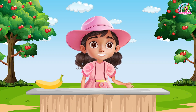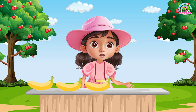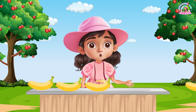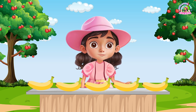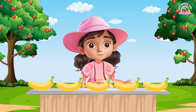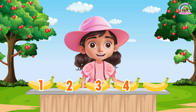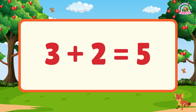Now let's try it with bananas. Here, I have three bananas. If I add two more bananas, how many bananas do I have in total? Let's count them together: one, two, three, four, five. That means three plus two equals five.